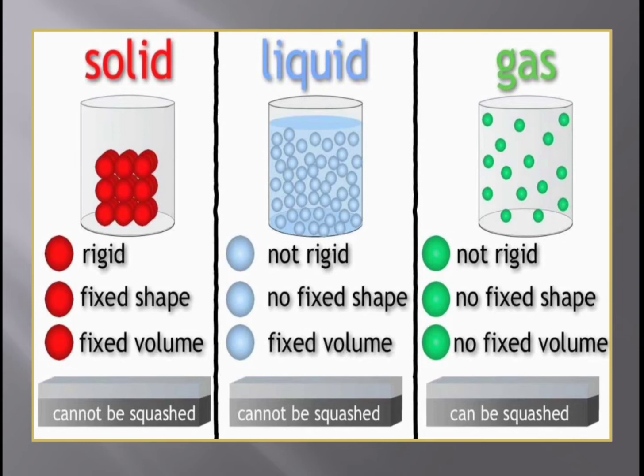Even though the gas has a larger volume, we can put it in a smaller space. Oxygen cylinders, CNG, LPG — all these are examples of gases that can be used by compressing them.